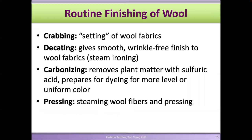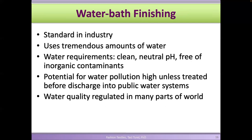Then there are inspections and repairs. Wool goes through unique routine finishing steps: crabbing, decading, carbonizing, and pressing. Carbonizing removes plant matter from wool using sulfuric acid to dissolve it. Steaming the wool is the pressing step. For a smooth, wrinkle-free finish, steam ironing is called decading.